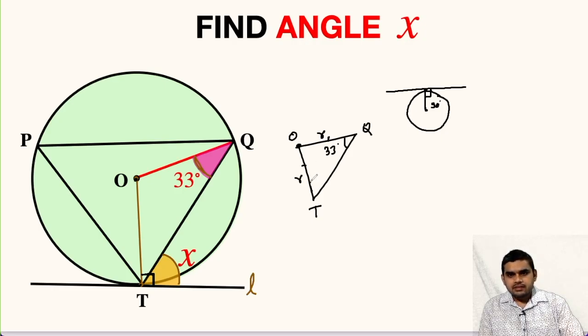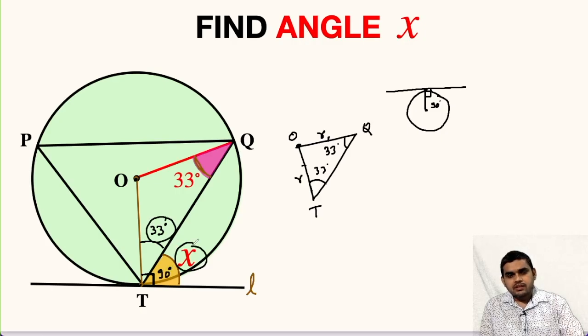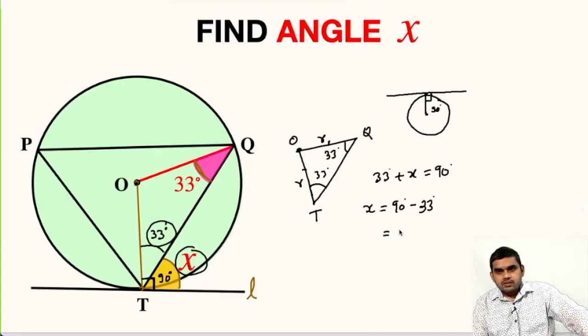Thus, this angle O, T, Q will also be 33 degrees. Let us write it here. This is 33 degrees. Now, we have already found that this angle is 90 degrees. That means 33 degrees plus x will be equal to 90 degrees. So x will be 90 minus 33 degrees, which is equal to 57 degrees.